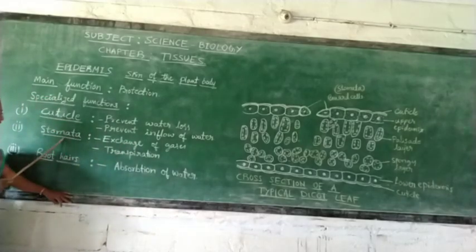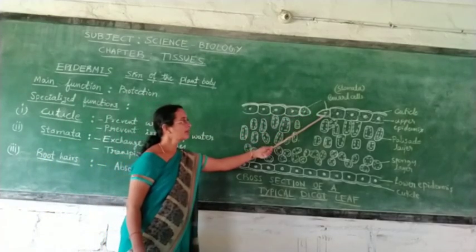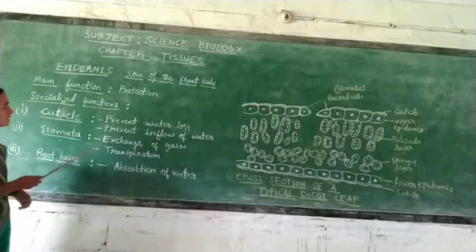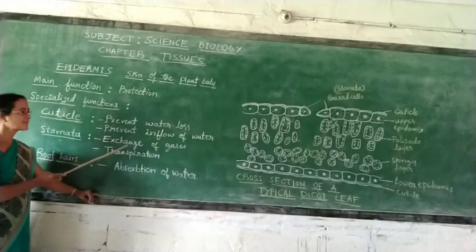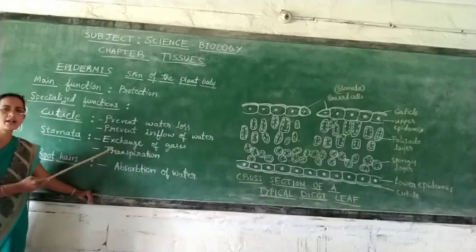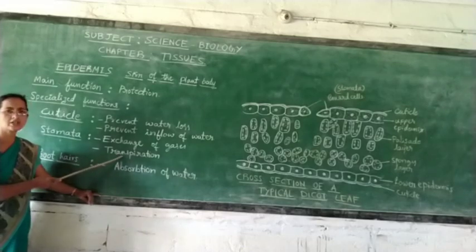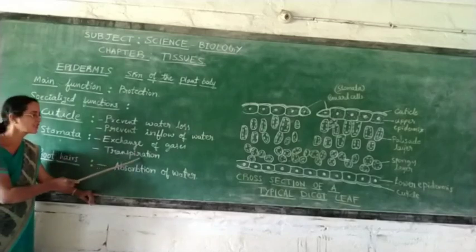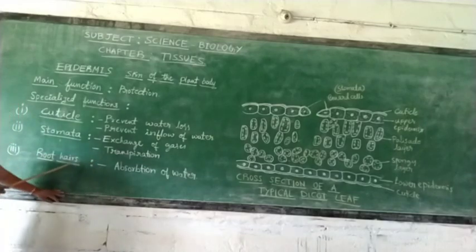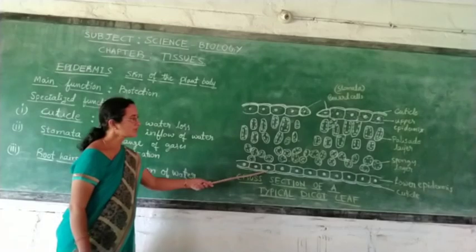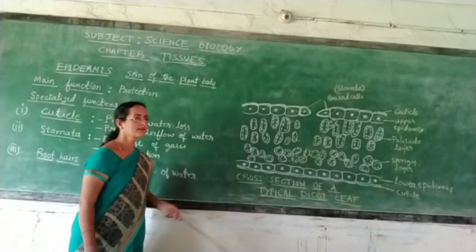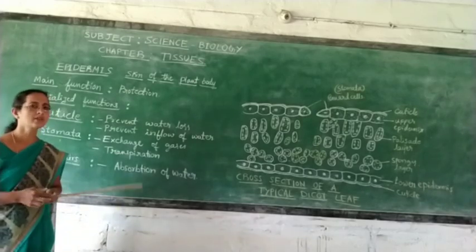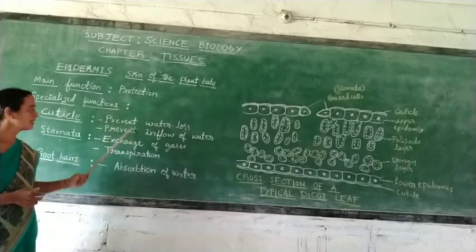The second modification: epidermis cells transform to form two bean-shaped cells called guard cells, and these two guard cells form a stomatal pore. This stomatal pore does two important functions: exchange of gases and transpiration. Plants take in carbon dioxide and give out oxygen, whereas in transpiration, excess water absorbed by roots is lost from the stomatal pore in the form of water vapor. The third modification: epidermis cells form root hair-like structures called root hairs, which help in the absorption of water from the soil.